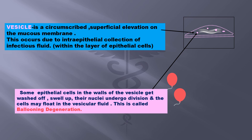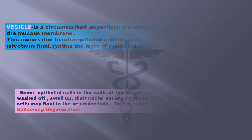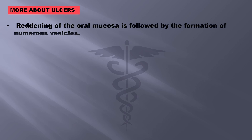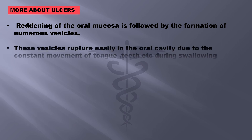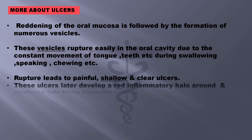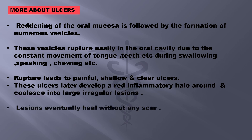Let us now know a little bit more about the oral ulcers. The reddening of the oral mucosa is followed by the formation of numerous vesicles. These vesicles rupture easily in the oral cavity due to constant movement of the tongue, teeth, and buccal mucosa during swallowing, speaking, and chewing. Rupture leads to painful, shallow, and clear ulcers, which later develop a red inflammatory halo around them. They coalesce into larger irregular lesions and eventually heal without scar formation.